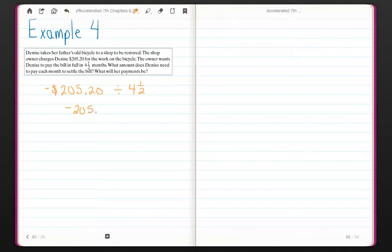Negative 205.20 divided by 9 halves. I'm going to turn this into a fraction also. 205.20 over 1 times the reciprocal of 2 ninths. Multiply straight across. 205.20 times 2 is 410.40 divided by 9 equals...